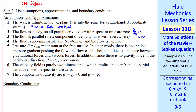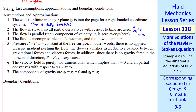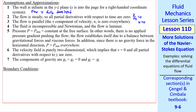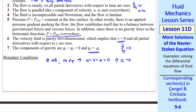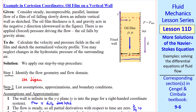Number three: u is zero everywhere. Number four: the fluid is incompressible, Newtonian, and laminar. Number five: atmospheric pressure is constant at the free surface, so if we don't worry about hydrostatic pressure in the air, then p equals p_atm everywhere. Number six: the velocity field is purely two-dimensional, meaning v equals zero and all partial derivatives with respect to y are zero. Number seven: the only component of gravity is in the negative z direction.